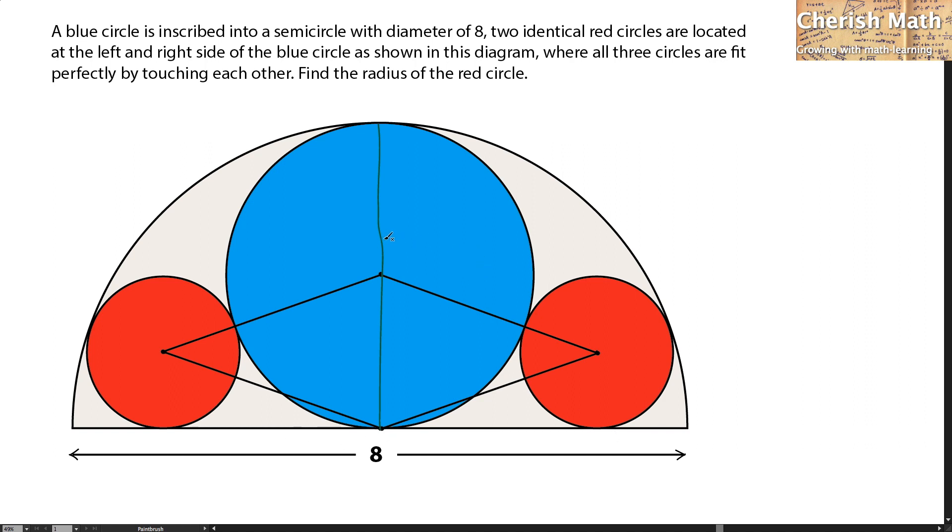I got four units for the diameter of the blue circle. Well, for the radius of the blue circle, that would be just one half of the four units.